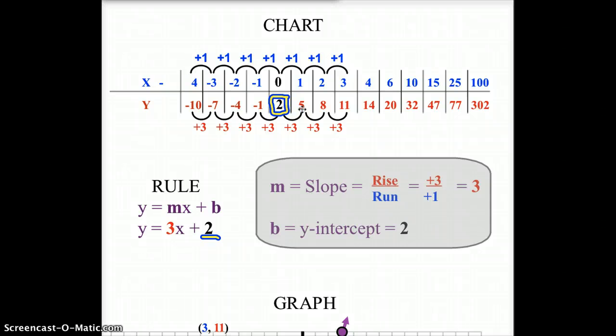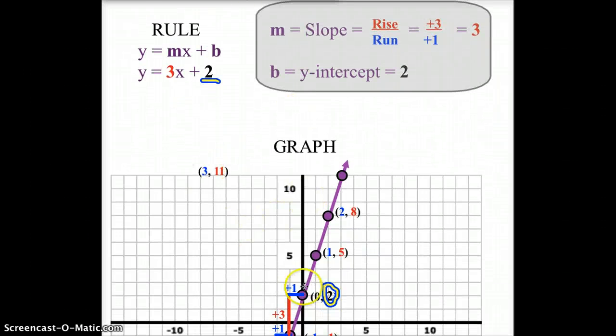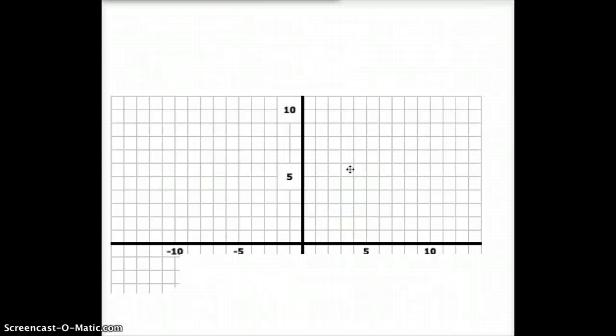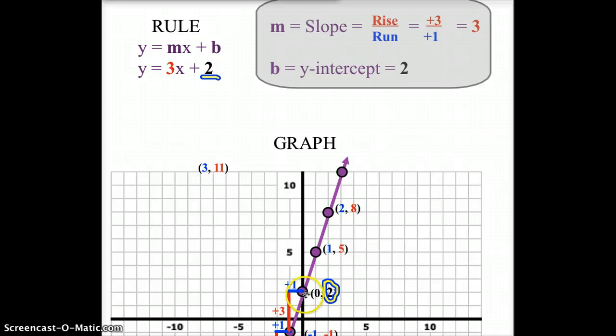So how can we take the rule and create this little graph here? Well, we take the rule, and let's say we had x equaling 0 right here. When x equals 0, we plug in 0. 0 times 3 is 0 plus 2 is 2. So when x is 0, y is 2. So we plot that point. If x equals 1, 1 times 3 is 3 plus 2 is 5. So 1, 5.